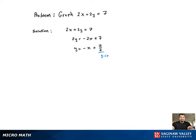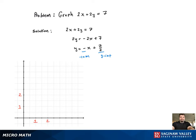Now to graph it, we need to realize some things. 7 halves is the y-intercept, and negative 1 is the slope. With those two pieces of information, we can graph.